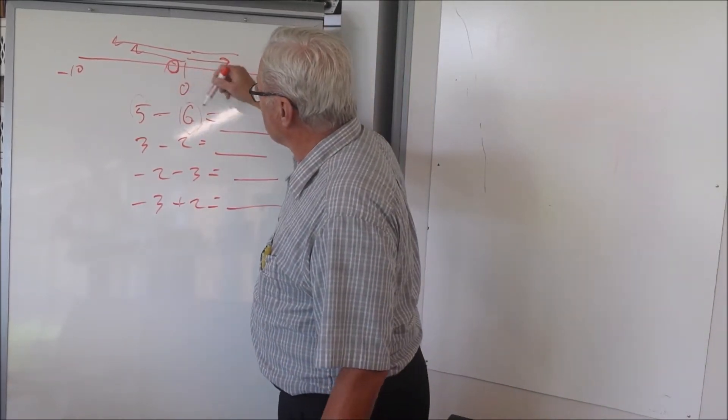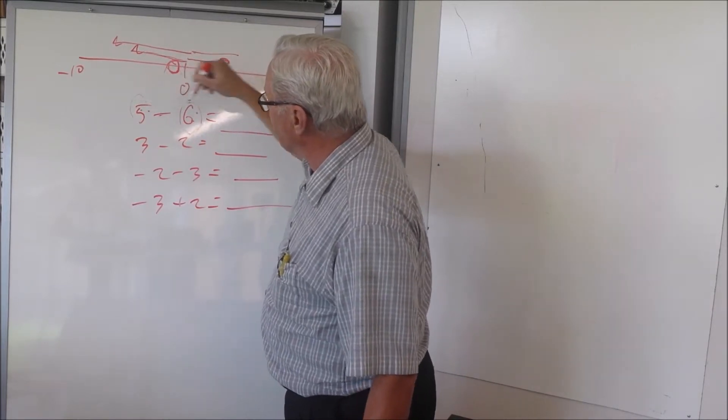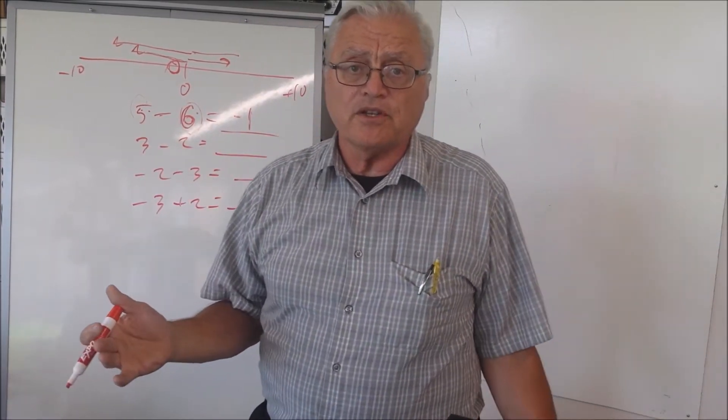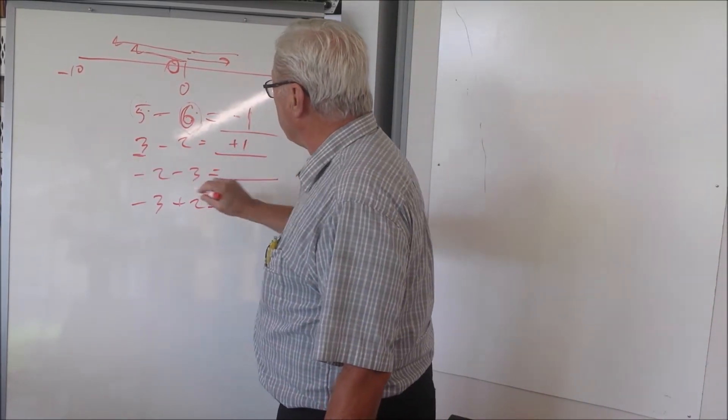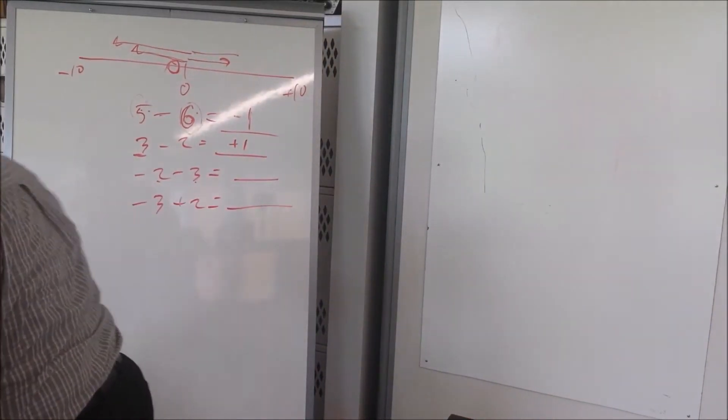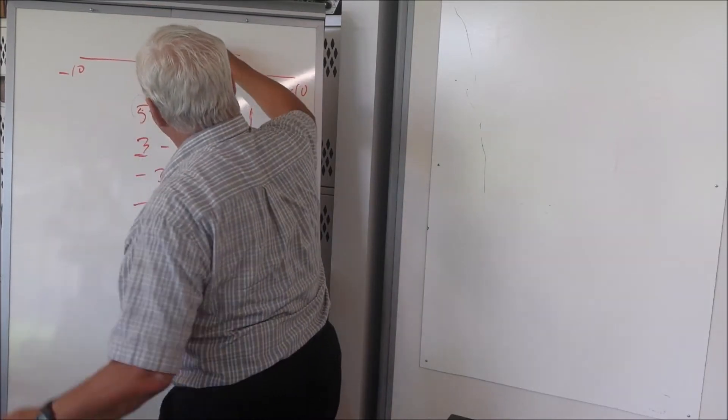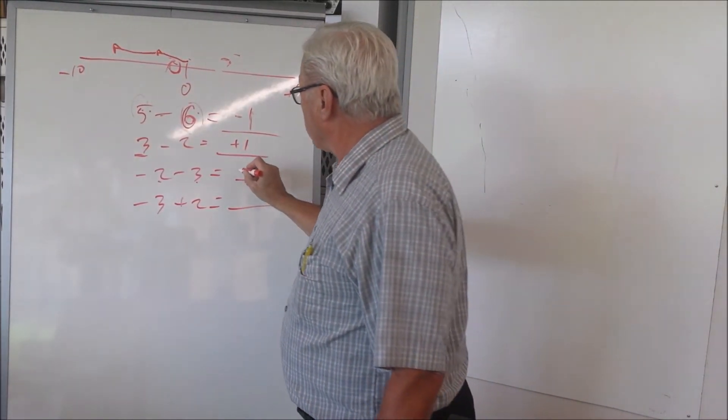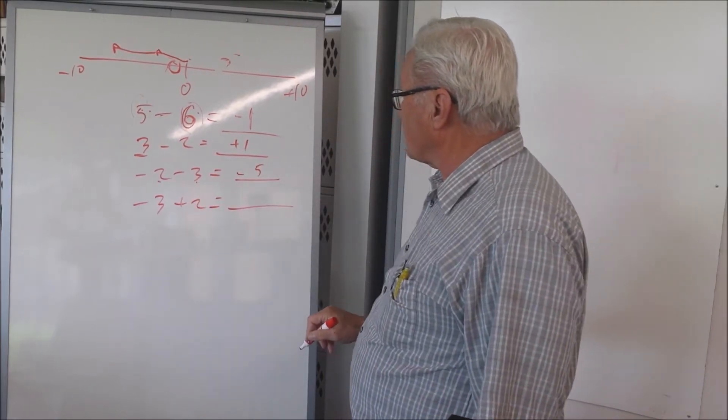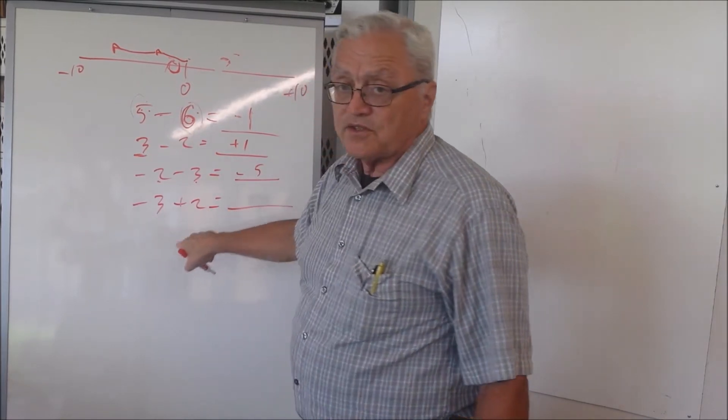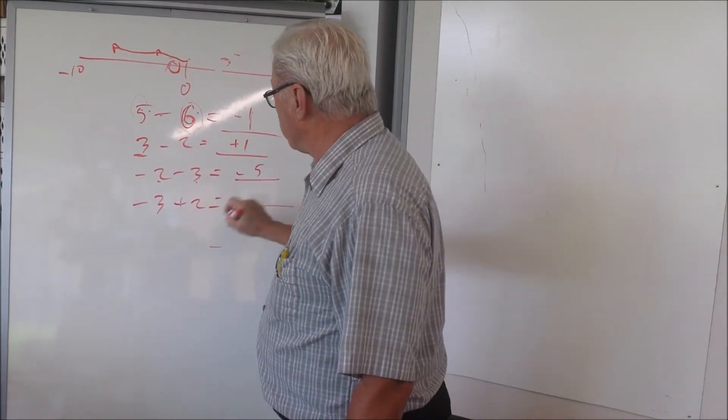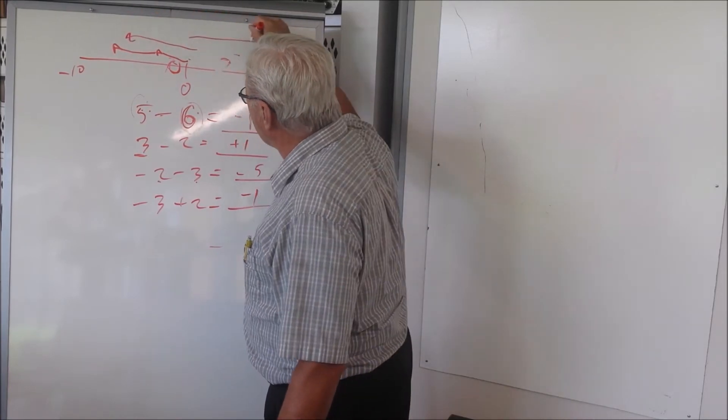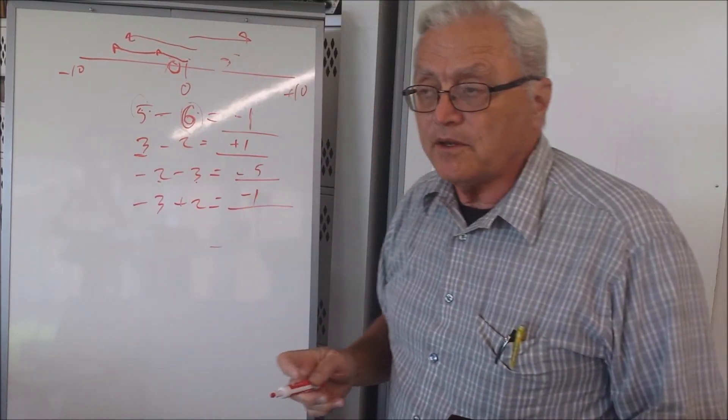Okay, are we back? So 5 minus 6, the negative part is larger. The difference between 5 and 6 is 1, and it's a negative 1 because the negative part is larger. 3 minus 2, the difference is 1, the positive part is larger, so it's plus 1. Minus 2 minus 3, they're both negative. I'm going to go minus 2 and more for minus 3, so I end up with negative 5. Minus 3 plus 2, the negative is larger, so I'm going to have a negative answer. The difference is 1, so I get minus 1. Just using the number line and the idea that negative takes you that way, positive takes you that way, and the distance you go is a function of the magnitude of the number.